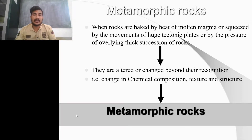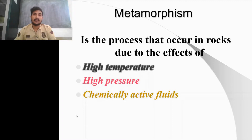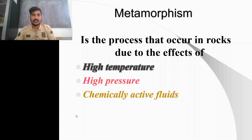The agents of metamorphism are temperature and pressure. Regarding temperature, it can come from either the interior of the Earth, from radioactive decay, or from the geothermal gradient — that is, there is an increase in temperature as we go deeper.